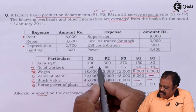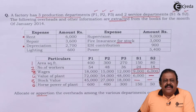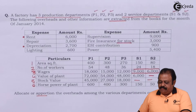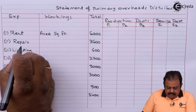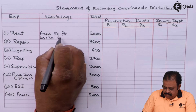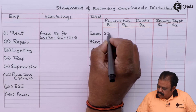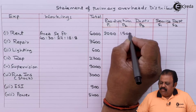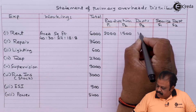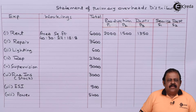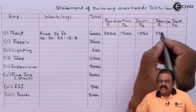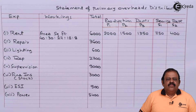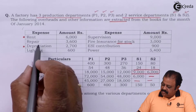Rent will be allocated in the ratio of area occupied by each department: 400 to 300 to 270 to 150 to 80. The calculated amounts are: production department 1 — rupees 2000, P2 — 1500, P3 — 1350, service department 1 — 750, and service department 2 — rupees 400.